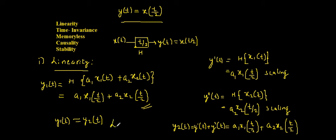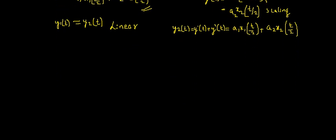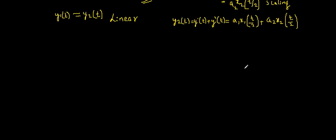Comparing y1(t) and y2(t), these two outputs are equal. Hence we conclude that the given system is linear.